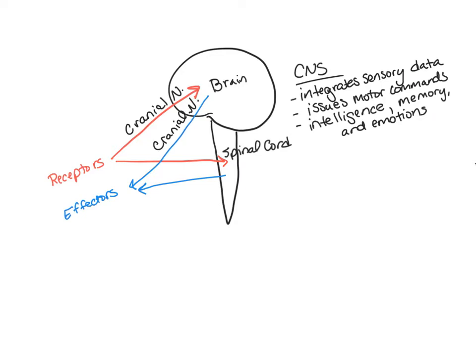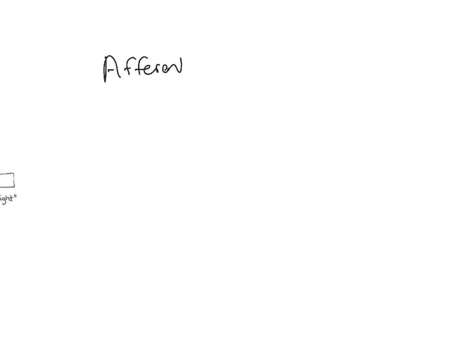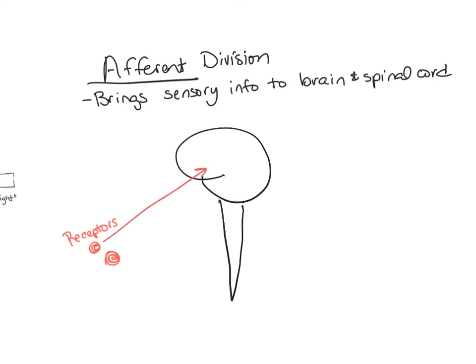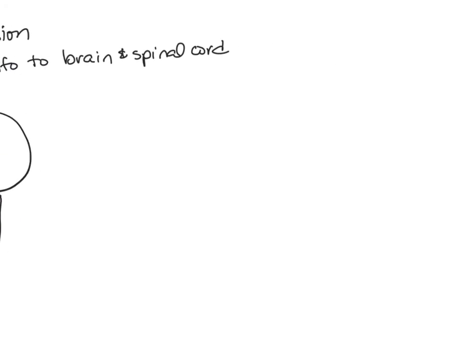The nervous system can also be divided into functional divisions: the afferent division and the efferent division. The afferent division brings sensory information towards the central nervous system from receptors in the tissues and organs of the body. Receptors are sensory structures that can detect changes in the internal environment, like pH or oxygen levels, or respond to specific stimuli like pain or pressure.